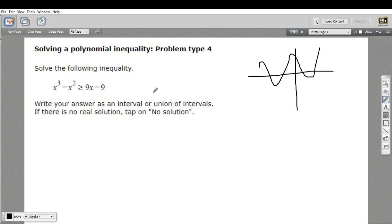So let's actually do that first. Let's subtract 9x and add 9 to both sides. And we'll get x cubed minus x squared minus 9x plus 9 is greater than or equal to 0.